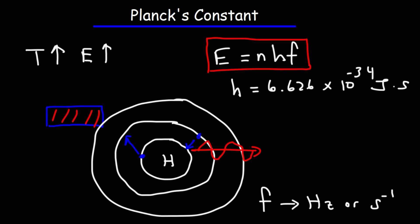It's not continuous. It can only have discrete values. So it can't be just any value, but it's a multiple of HF. It can be 1 HF, it could be 2 HF, 3 HF, but nothing in between that.